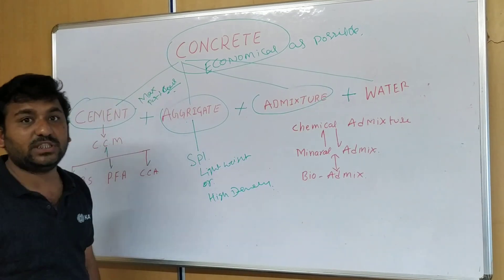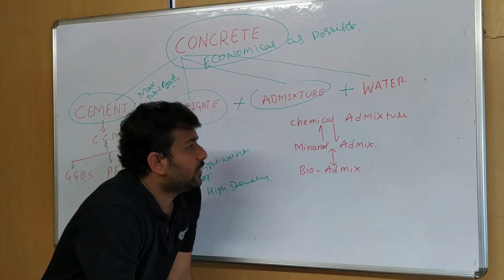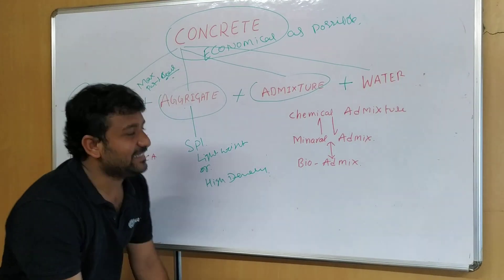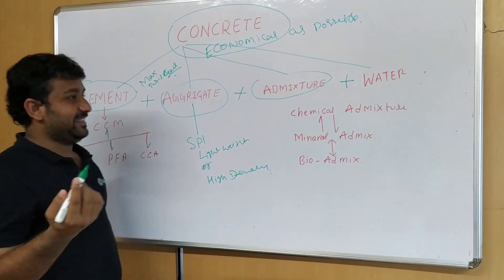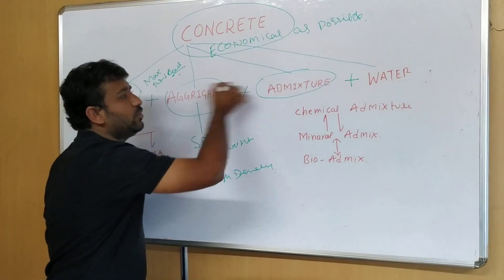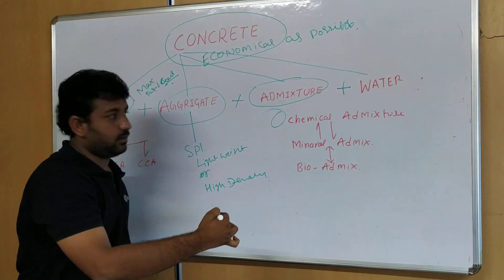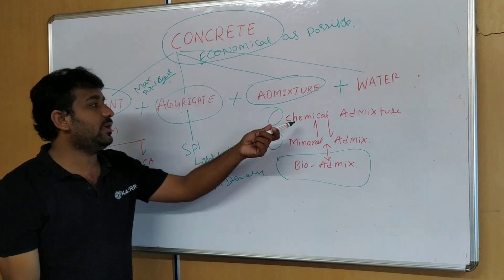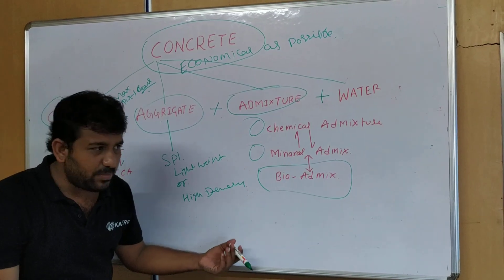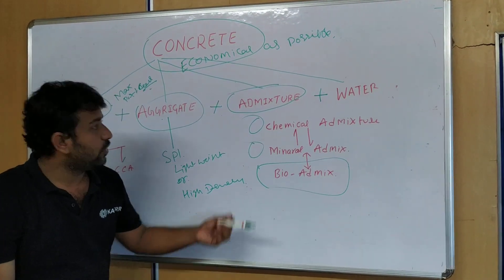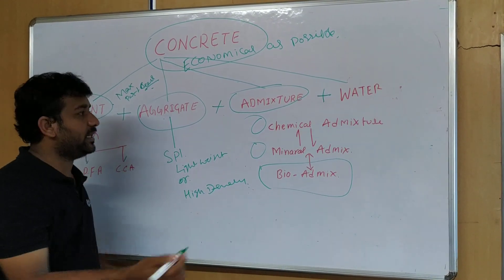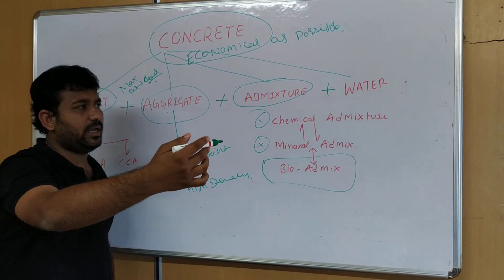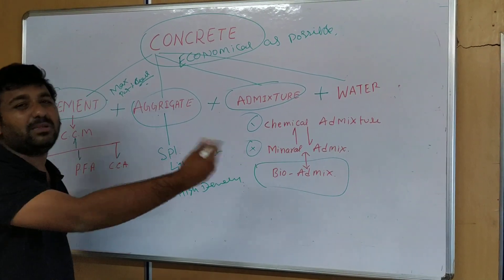Next, coming to admixture, which plays a very, very important role. Some people are totally dependent on admixtures — like chemical admixtures, like mineral admixtures, and like bio-admixtures, which is a new area I am going to explain. Chemical admixtures come from companies like BASF, Sika, Force Rock, Chryso — delivered in containers or barrels of 220 kg or so, in liquid form. Mineral admixtures are something like alccofine or micro silica, which are mostly in dry form.